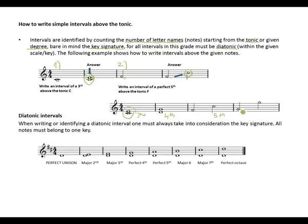From G: counting one, two, three, four, five, six, seven, eight — this is your perfect octave. All these intervals are major and simple intervals. The first two examples are harmonic and the last two bars are melodic.